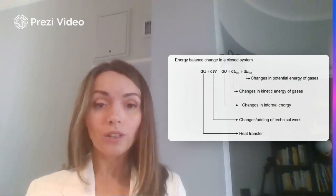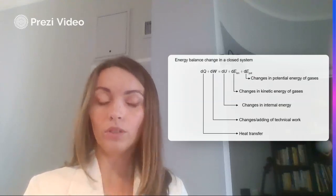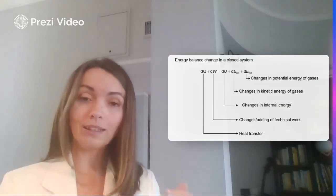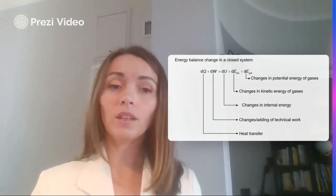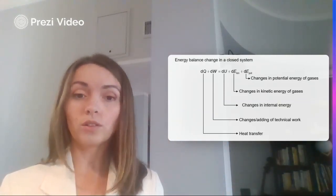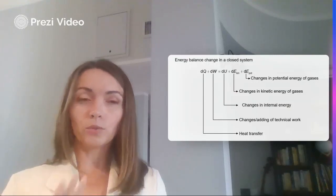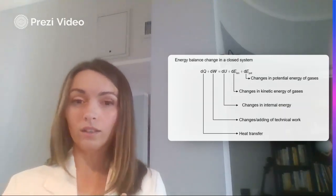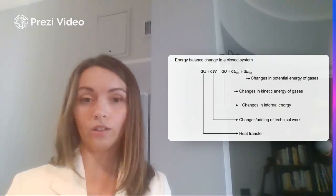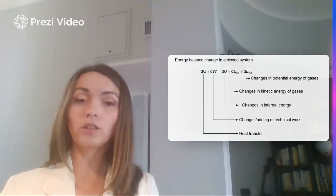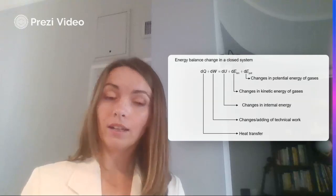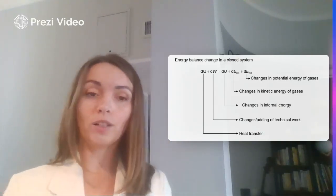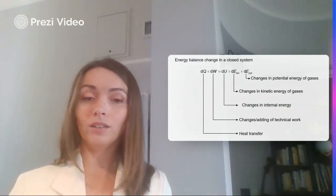According to the first law of thermodynamics, all the technical thermodynamical work is equal to the heat transfer, changes of the internal energy, and the changes of the kinetic and potential energy of the gas. This is valid for the closed system. So all the work done by the system or towards the system is transformed into the changes of the internal energy, heat, and kinetic/potential energy. Potential and kinetic energy are usually quite small in comparison to others, so we can neglect them for calculations. We always have that Q plus W is equal to the internal energy.